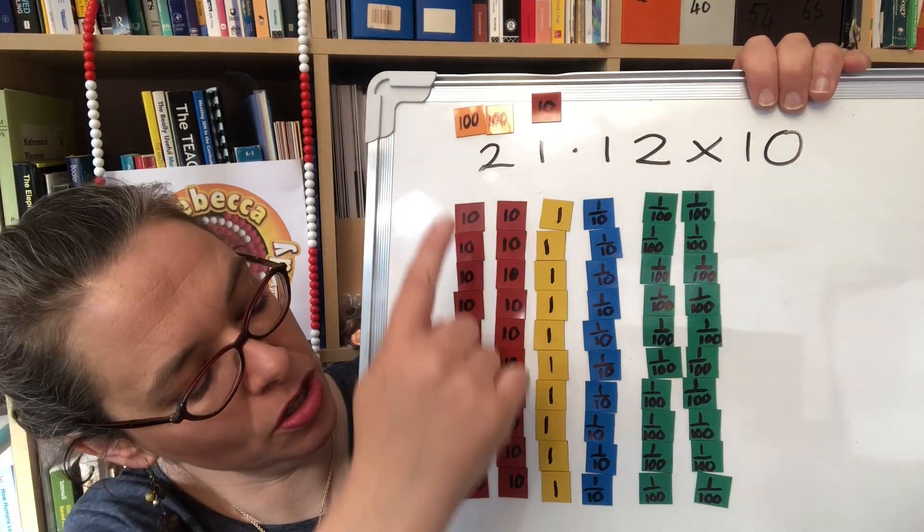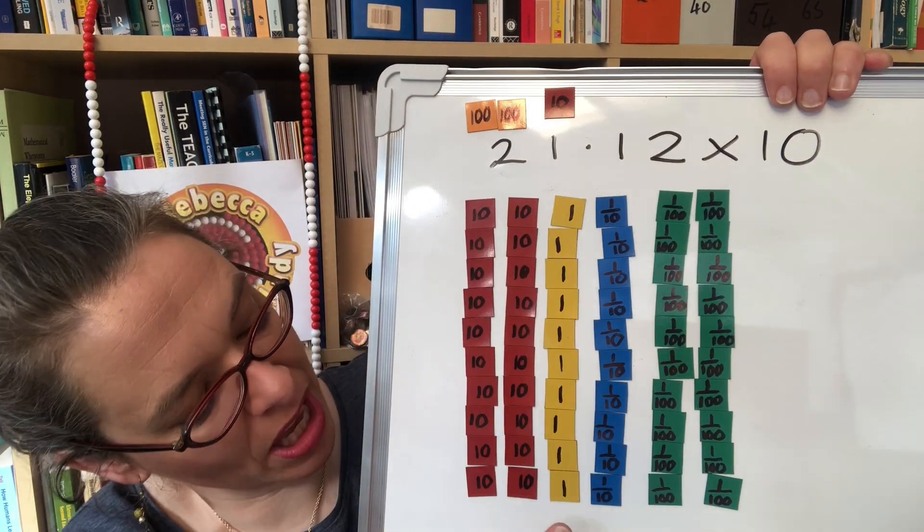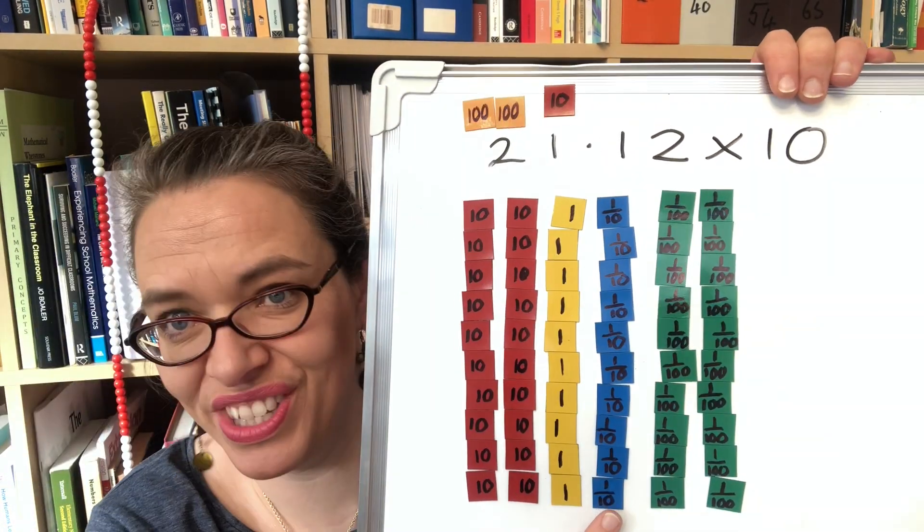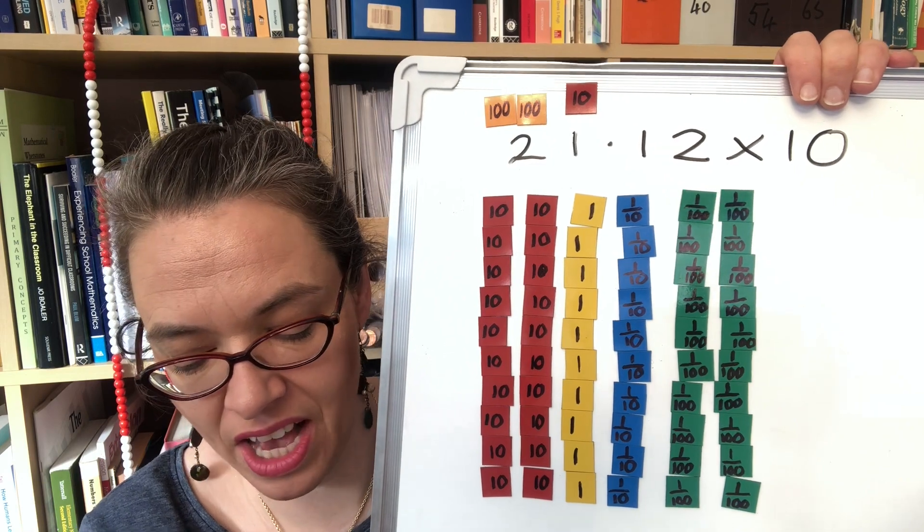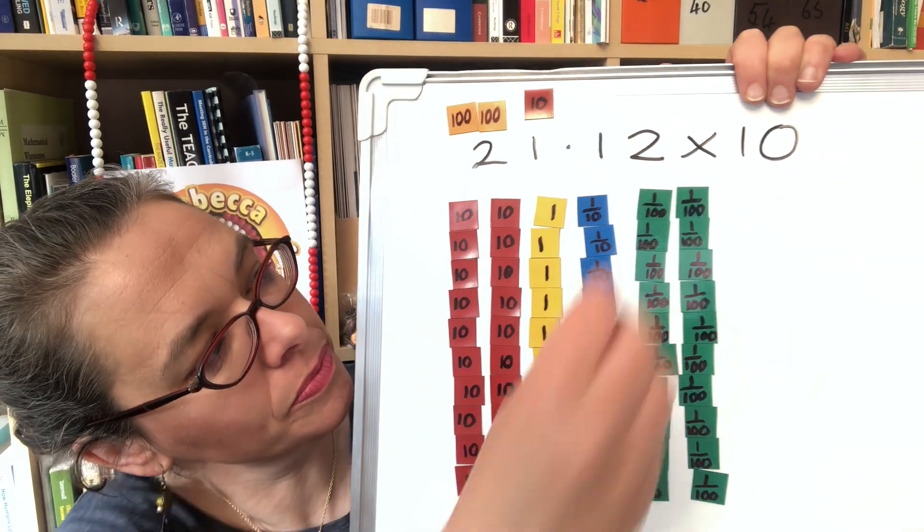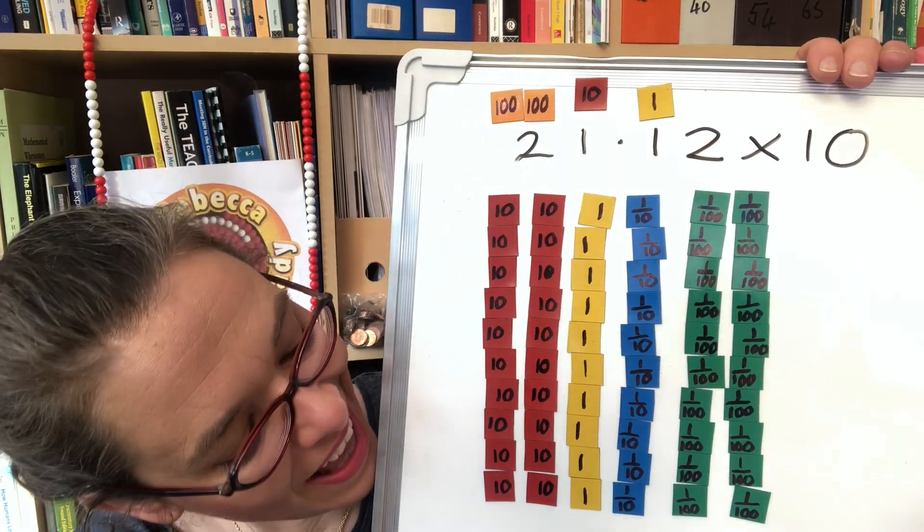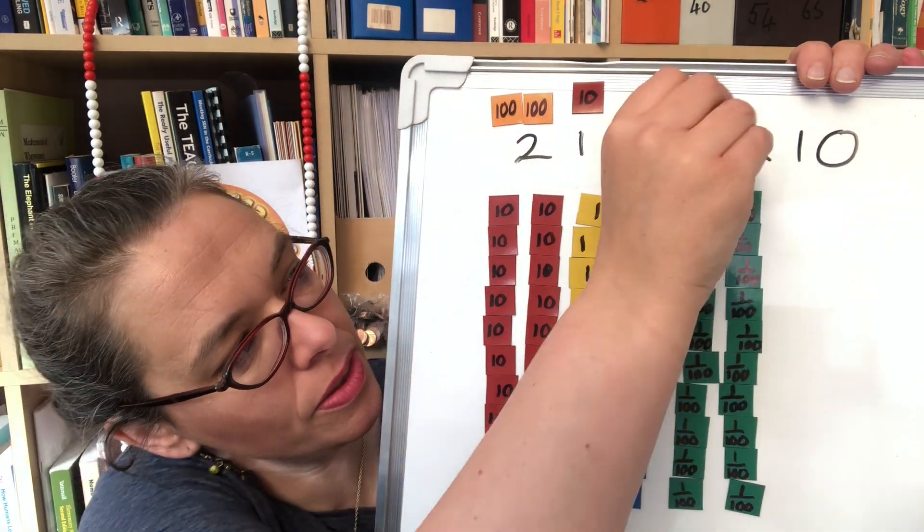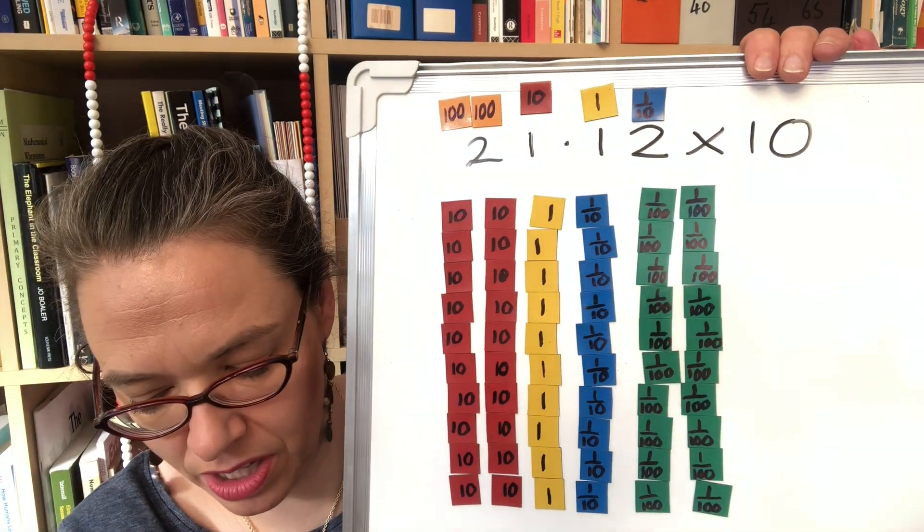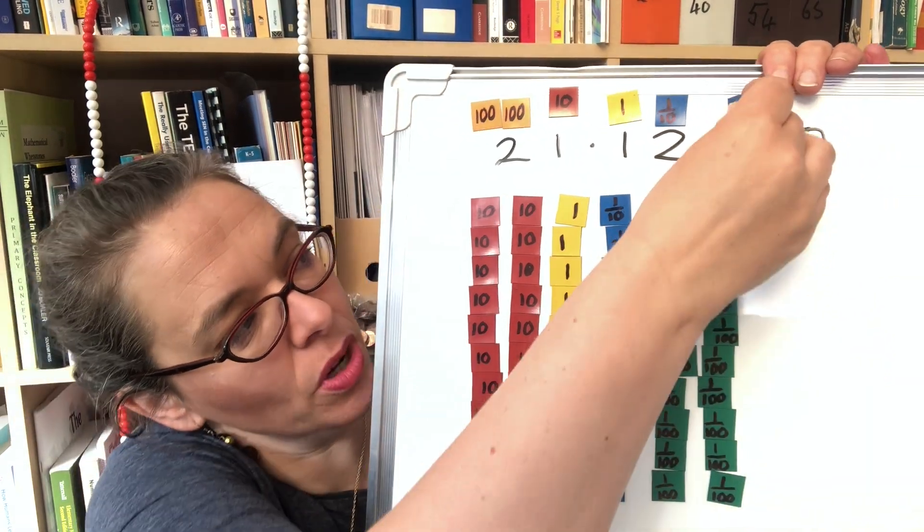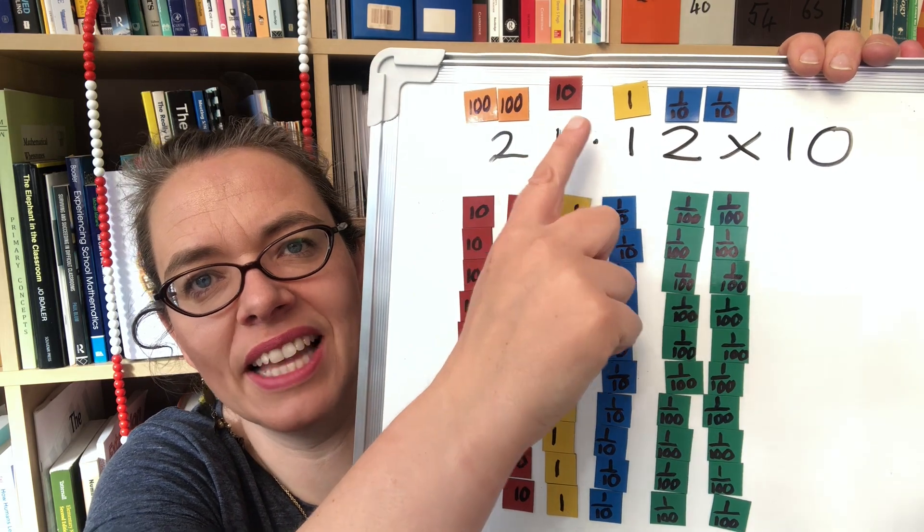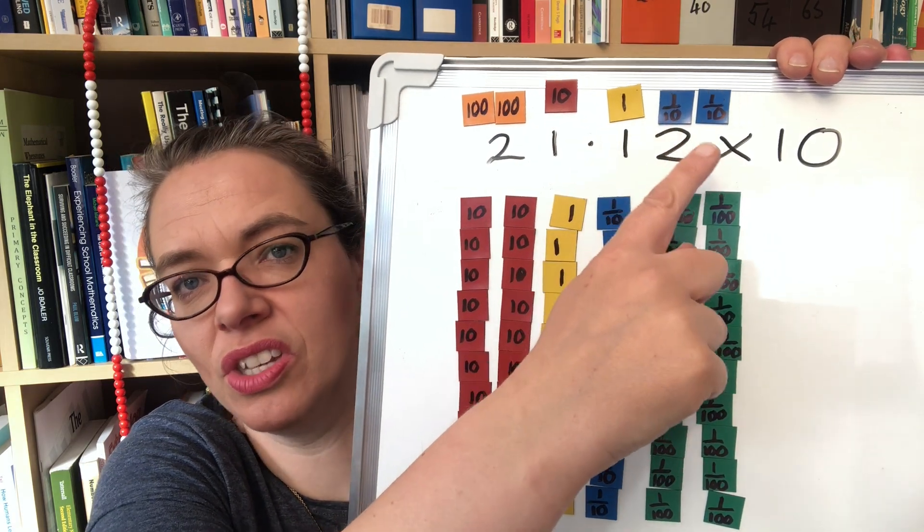So we've 10 tens which became 100, another 10 tens which have become 100, 10 ones which have become 10, 10 one tenths well they are going to become one, and 10 one hundredths which will become one tenth and another 10 one hundredths which will also become one tenth. Therefore we can see our answer is 211.2.